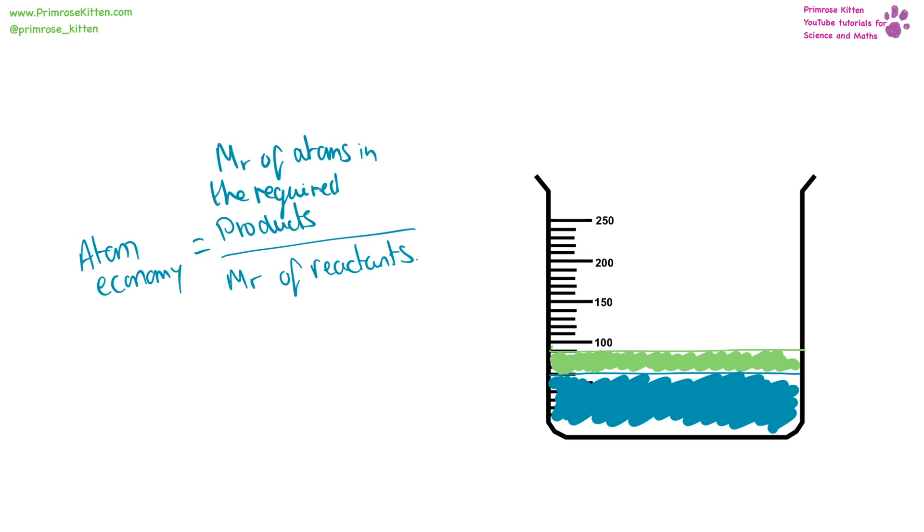To work out your atom economy, that is your MR of atoms in the required products over your MR of reactants. Or the MR of stuff you wanted over the MR of the stuff you actually got.